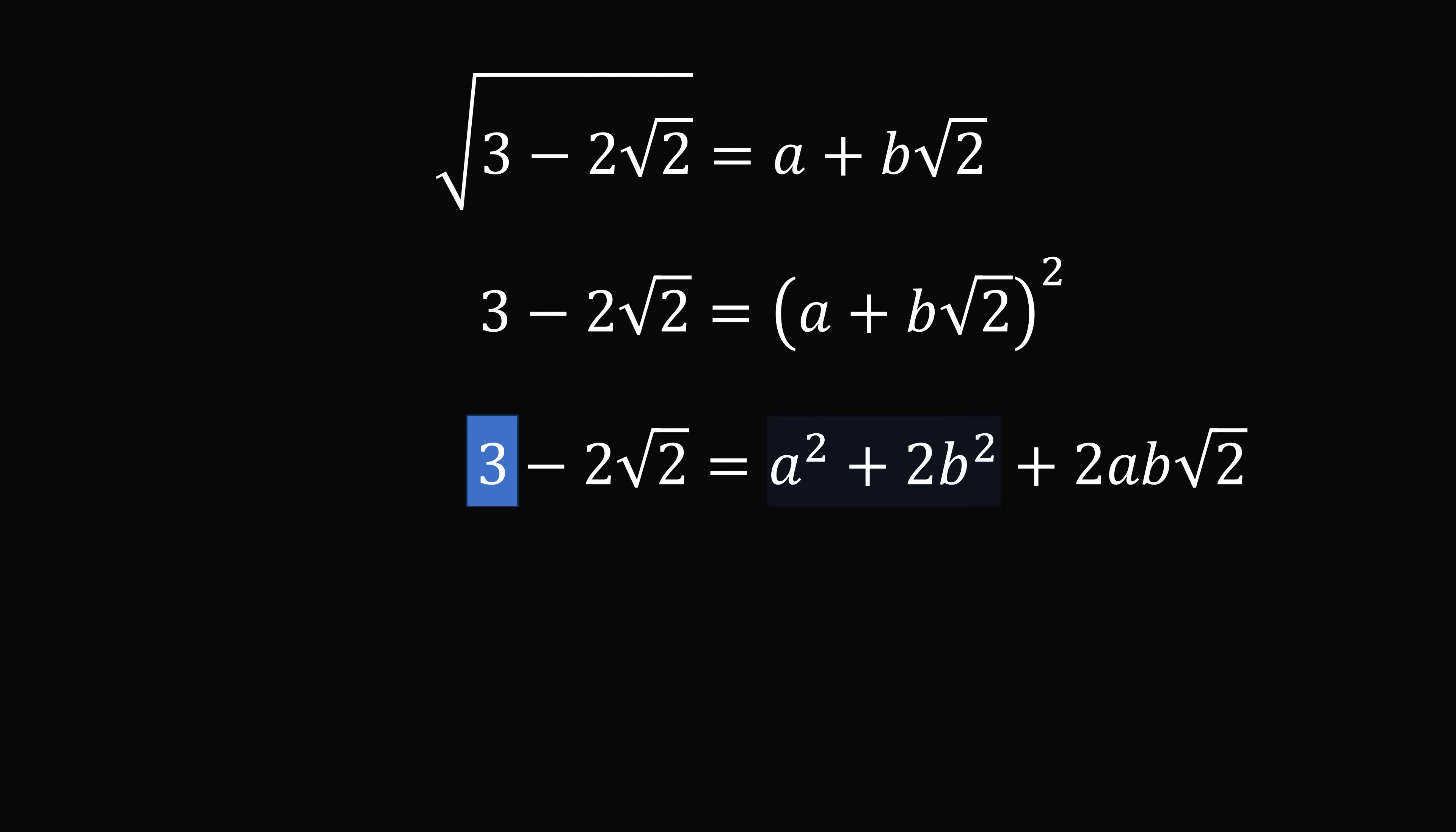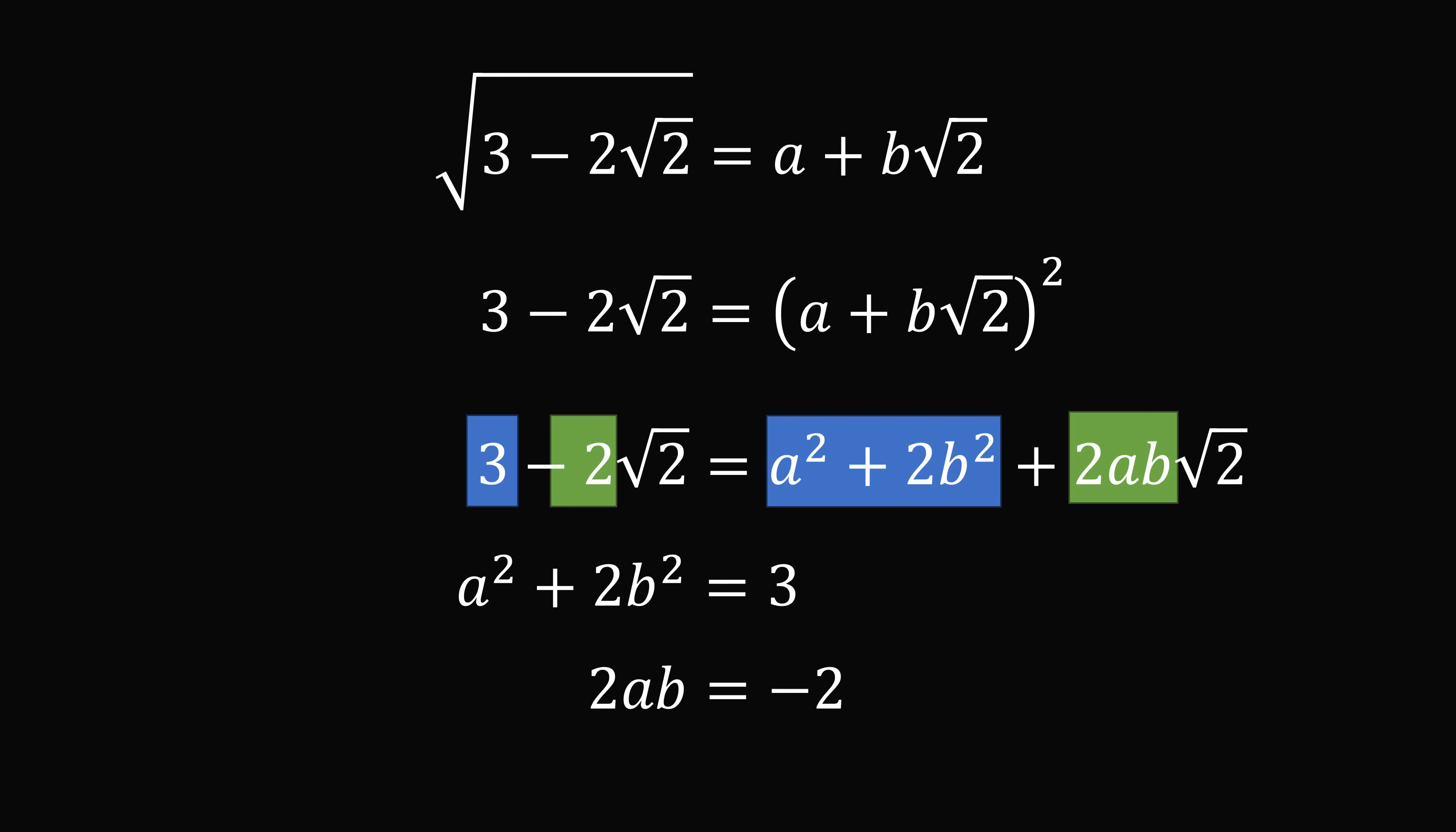Now, we will equate 3 with a squared plus 2b squared, and we will equate negative 2 with 2ab. So we end up with two equations. We have a squared plus 2b squared is equal to 3, and 2ab is equal to negative 2. So let's work through these equations.